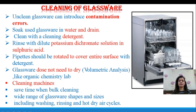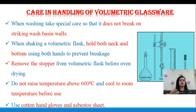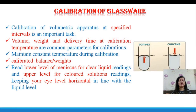While handling volumetric glassware during washing, it should not touch or strike the wash basin — handle with care. When shaking the volumetric flask, hold it at the neck and the bottom to prevent breakage. Remove the stopper of the volumetric flask before drying in an oven. Do not raise the oven temperature above 600 degrees Celsius, and cool the apparatus to room temperature before use. Use cotton hand gloves and an asbestos sheet when removing apparatus from the oven.